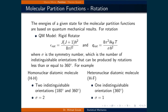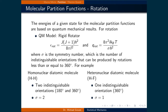The second type is rotational motion. The rigid rotator model is used to derive the energy expression. Substituting into Qrot and simplifying gives 8π² times the moment of inertia I times kbT, divided by sigma times h squared. Sigma is the symmetry number — the number of indistinguishable orientations produced by rotations up to 360 degrees, included to avoid over-counting states. For a homonuclear diatomic like hydrogen, sigma equals 2 (orientations at 180° and 360°). For a heteronuclear diatomic like HF, sigma equals 1.